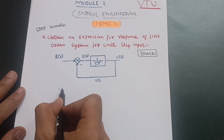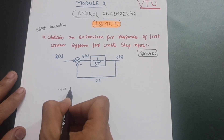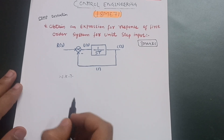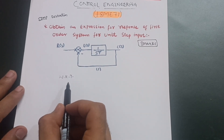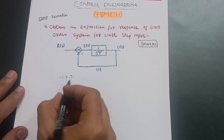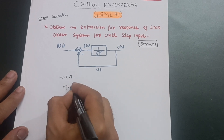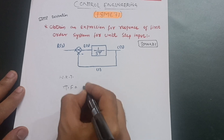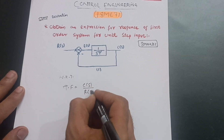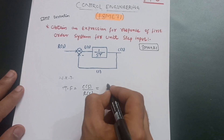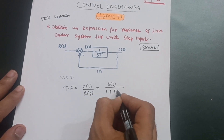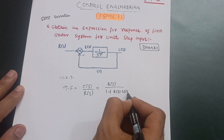We know the transfer function equation, which I have derived previously — I will provide the link in the description. The transfer function is C(S) upon R(S) = G(S) divided by (1 + G(S)·H(S)), where G(S) is the forward path and H(S) is the feedback path.